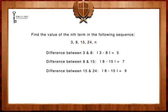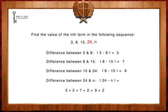As you can see, there is a pattern to this sequence of numbers. The difference between adjacent numbers is increasing by the value of 2. Hence, the difference between 24 and n should be 11.